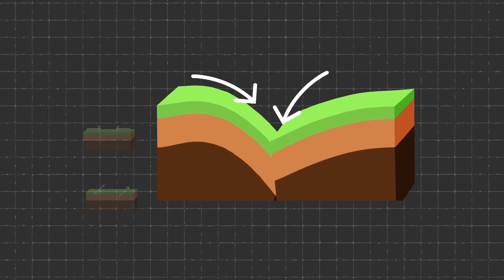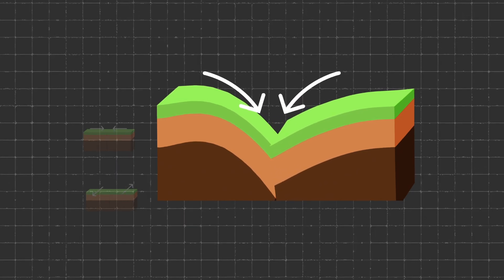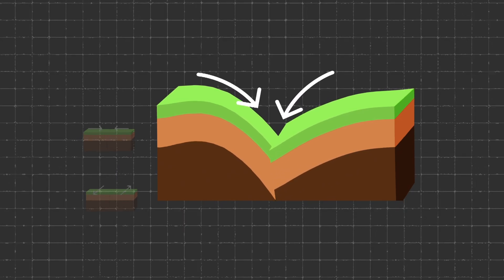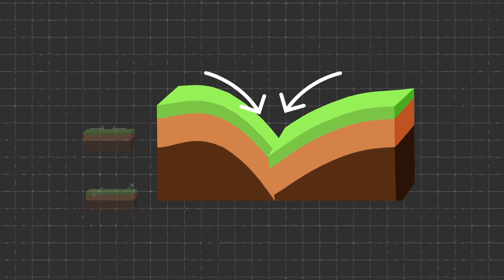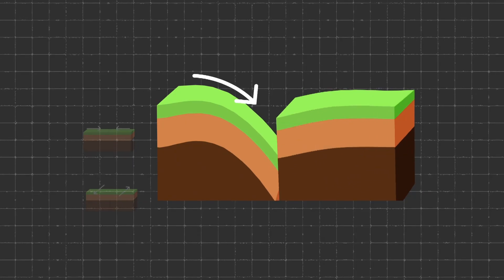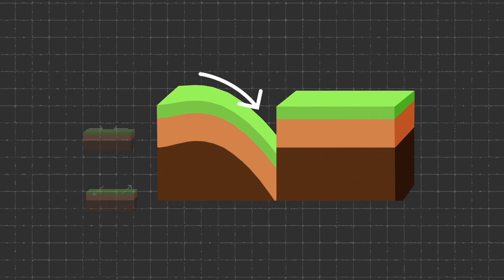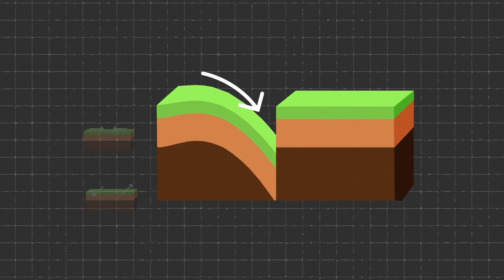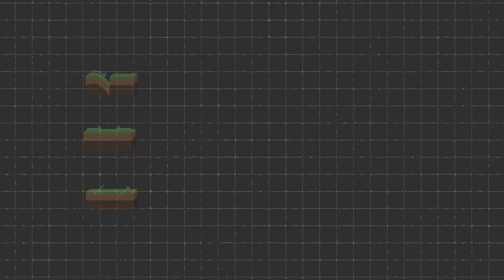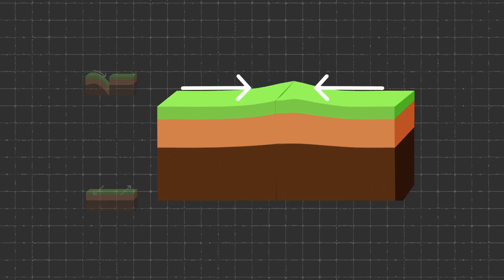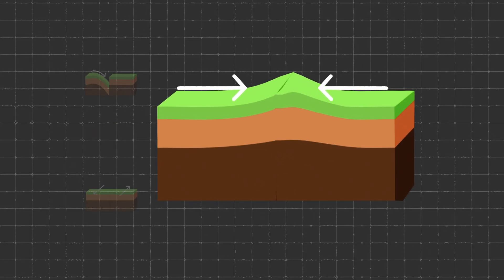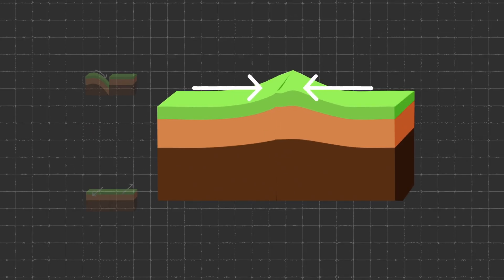As that happens, it pulls the top plate down a little bit, and then as that releases, it springs back. You can also have boundaries where plates are just butting up against each other, building mountains as the stress pushes them together.